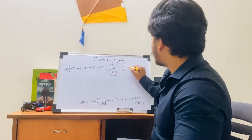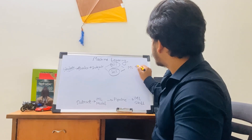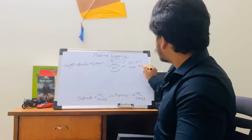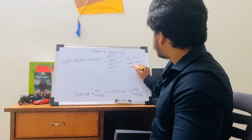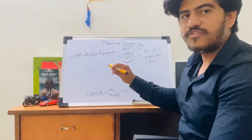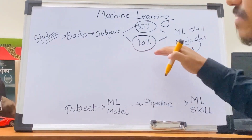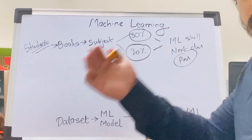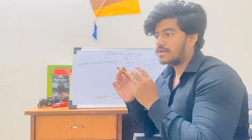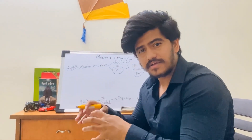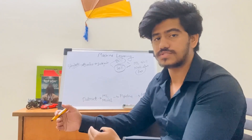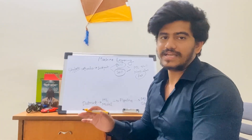So based on the subject we create an ML skill, which is nothing but the next class — or you can say the student has passed. This is how with the student example we can see how a retrainable machine learning model works. Now let's take an example of a non-retrainable machine learning model — the model which is already trained with a certain type of dataset and which is trained for a specific use.